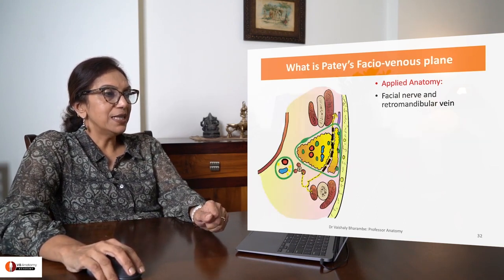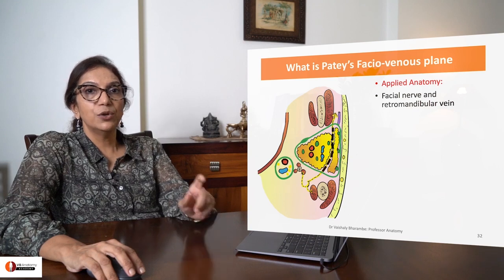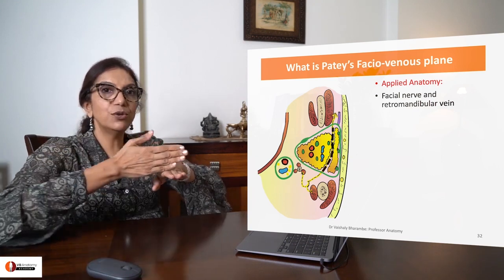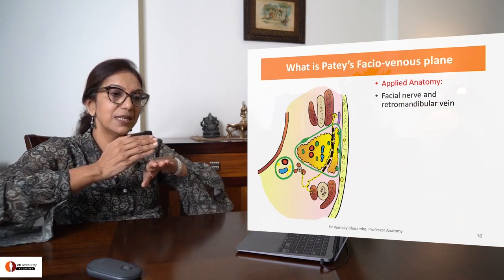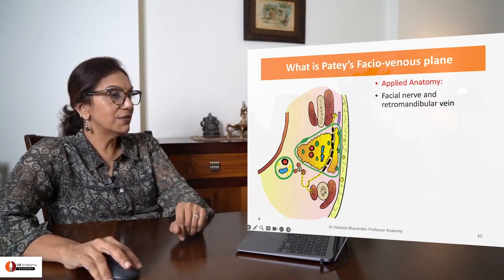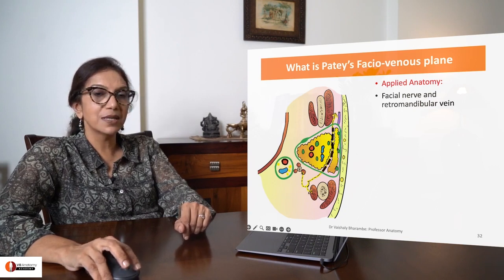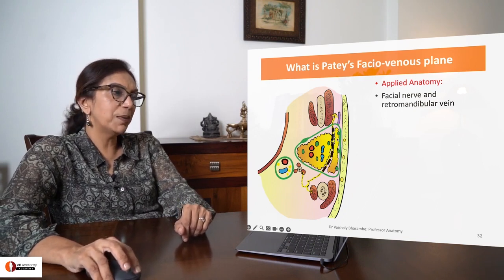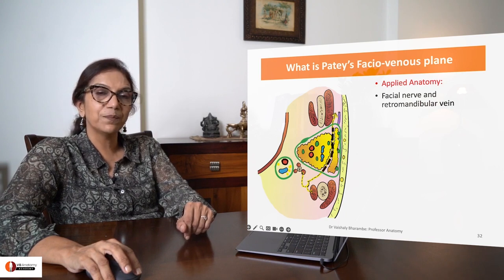What is Patty's facial venous plane? The facial nerve enters into the gland from posteriorly, passing through the gland and emerging anteriorly. It is dividing your gland into superficial and deep parts. The plane through which it passes is called Patty's facial venous plane.